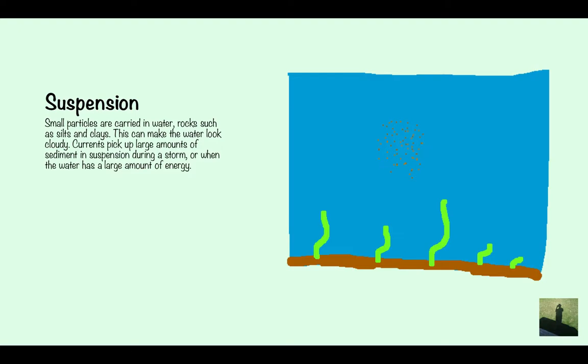The currents are going to pick up large amounts of sediment, but it's going to be small sediment. Large amounts of small sediment during a storm when the water has a large amount of energy. So that's particularly when suspension occurs.